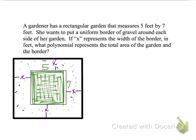So we can figure out the area of the garden. That's five by seven. That's 35. We get that. But we want to know the total area that includes the garden and the border. Maybe she wants to know how much space all of this is going to take up in her backyard.